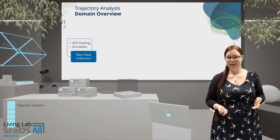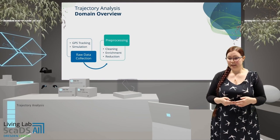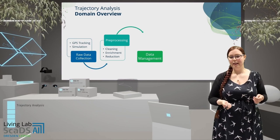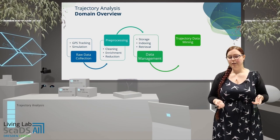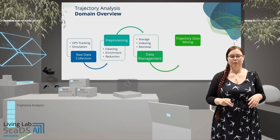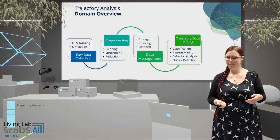This follows a general workflow, which includes raw data collection from GPS tracking or simulations, then pre-processing the data — which includes cleaning, smoothing, or data reduction, as well as semantic enrichment. The data then has to be managed: stored, indexed, and retrieved. After this, oftentimes some automatic approaches are applied, summarized in the trajectory data mining field. This contains classification, pattern mining, behavior analysis, outlier detection, or predictions.